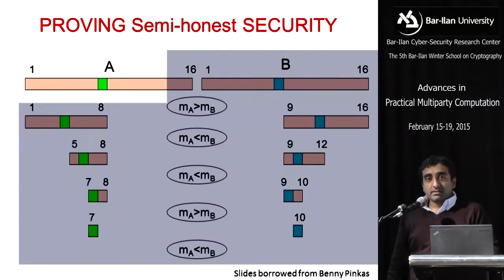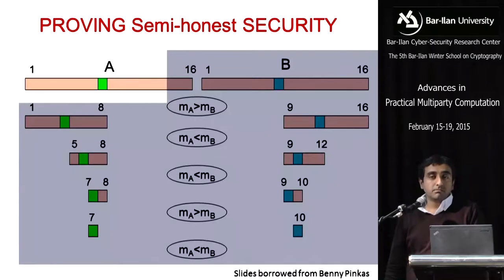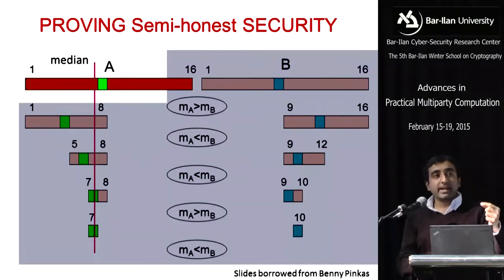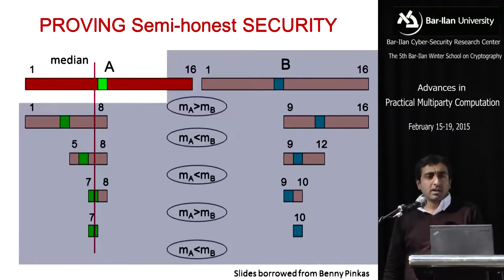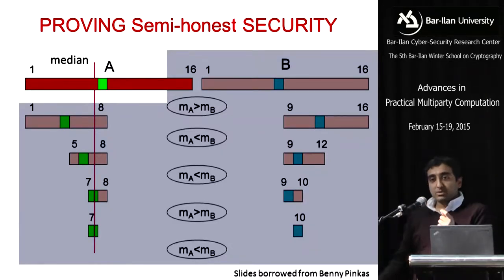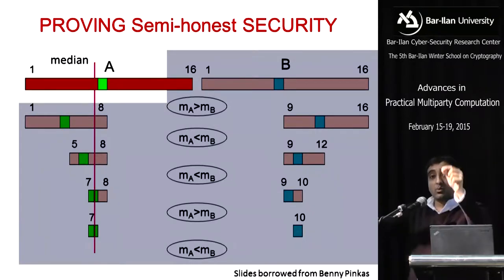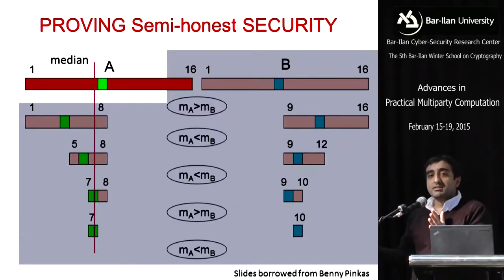We are going to think about this in the semi-honest case. Let's just look at Alice's data set. We know the simulation paradigm that we want to use to prove security. Let's say I am trying to simulate a corrupt Alice. With her input and the median, I want to know if I can recreate this sequence of steps — can I simulate this interaction? That means I need to know the outcome of the secure comparison in every step. The beautiful part of this approach is that with the actual answer, the median, you know what the outcomes of each of these comparisons have to be, because the median was always in between MA and MB. So the result of the comparison with respect to the median and one of these parties would result in the same outcome. This proves semi-honest security of this protocol.